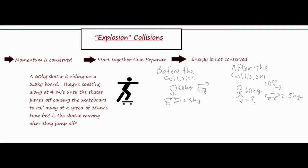Now that I've completed my picture, we always set up a before-the-collision section and an after-the-collision section. I draw a quick sketch of all the objects involved, put their masses right next to them, and make sure to include arrows to check for any negative signs. In this case everything is moving to the right in the positive direction, so no negative signs are needed. Now I'll use the momentum formula — momentum equals mass times velocity — three times for our different objects to solve for the unknown velocity of the person.